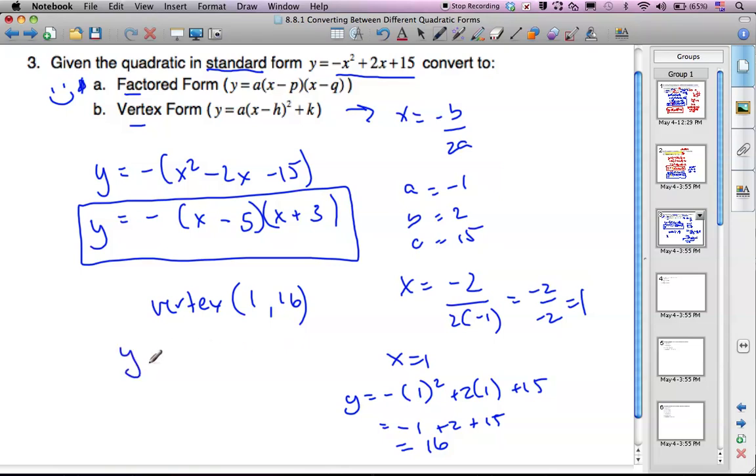And so to put it into vertex form, I know I get x minus 1 squared plus 16. What's the value in front going to be? So like I just said, it's going to be the same, or as you pointed out in the previous podcast, a is always the same, so it's just going to be negative 1. Right, super. And so here's my negative 1, negative 1, negative 1.